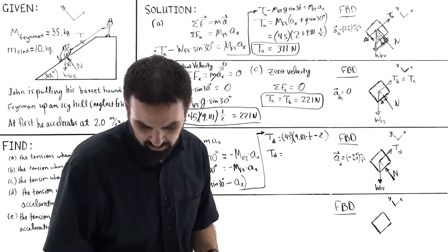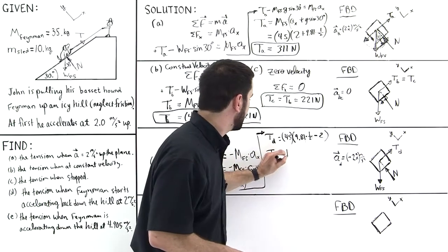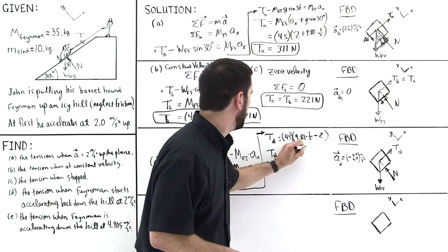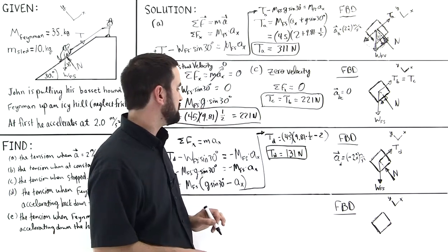And for part D, that number will be 131 Newtons. So this is 131 Newtons for part D.